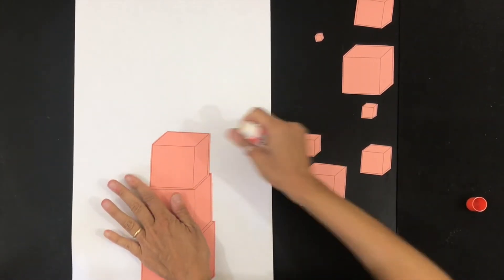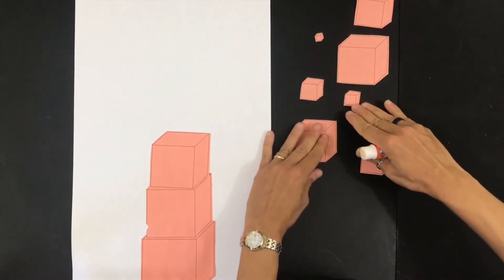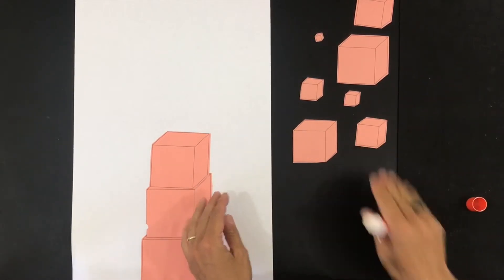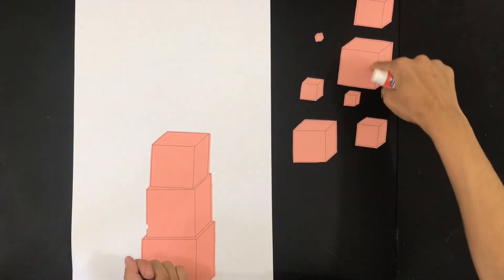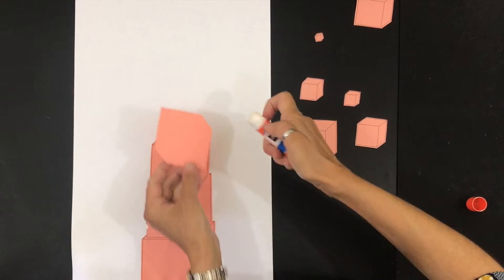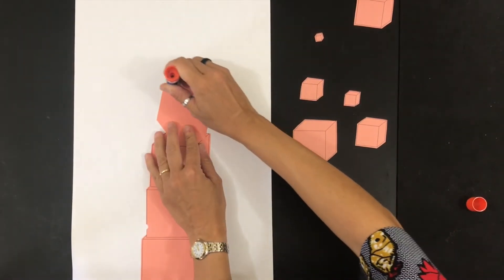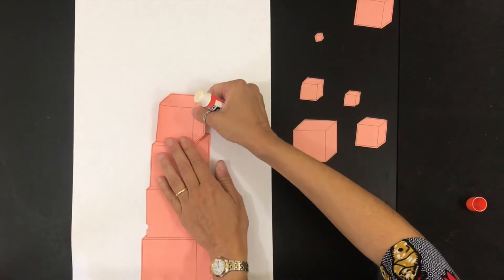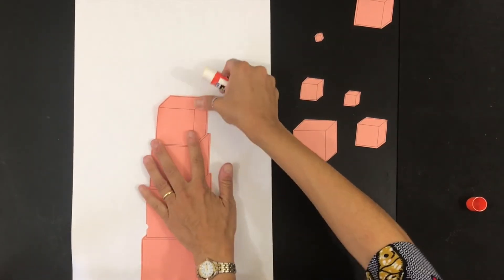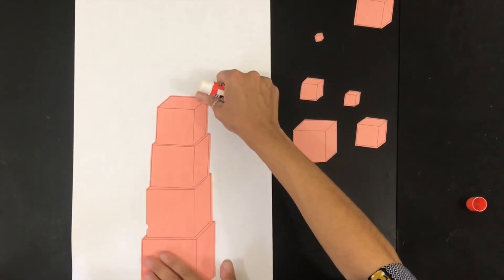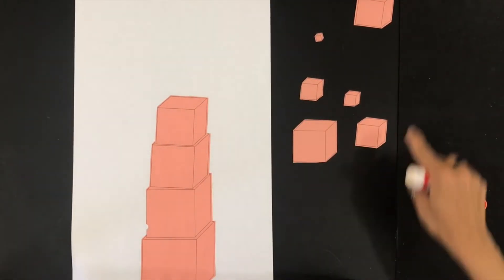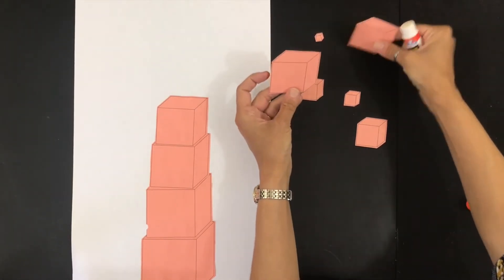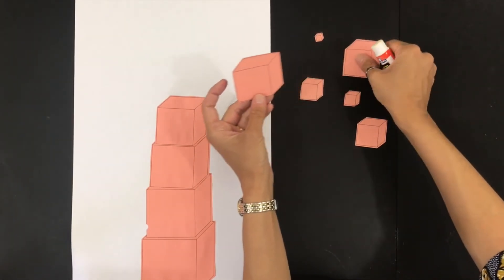All right, looking at the cubes we have left, which one is the biggest? Yes. All right, our pink tower is getting taller. Which one's the biggest out of what's left? Let's see which one is it between these two? That's right, this one.